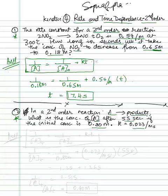And again, our equation to use is going to be 1 over, this is the final, is equal to 1 over original plus KT.